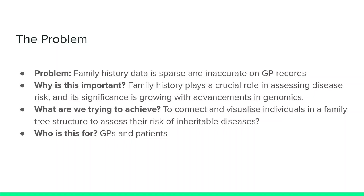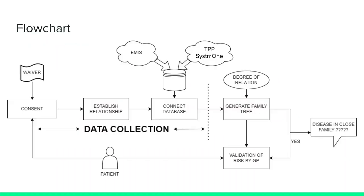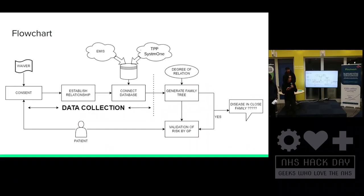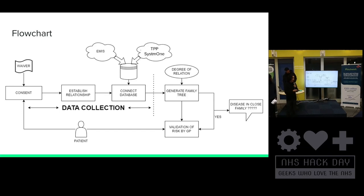And who is this for? So this is for GPs and patients. So this is our main flow chart. First we need to gain consent from the patient. Then we need to establish the relationships between individuals within a family. Then we need to generate the family tree. And then the GP would be able to assess the risk of the individual based on if they have close proximity of people in their family with disease.